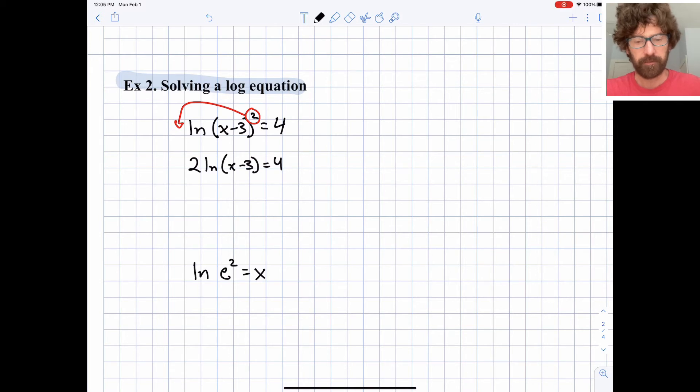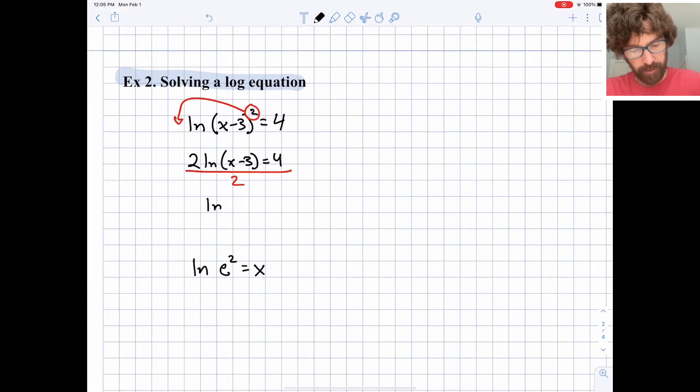And that's going to result in 2 times the natural log of the quantity x minus 3 equals 4. We can divide both sides by 2 right now. And we can work towards solving for x.